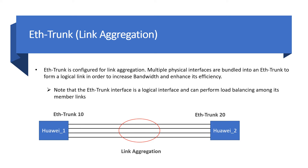In Huawei, link aggregation is called Ethernet trunk. Multiple physical interfaces are bundled into an Ethernet trunk to form a logical interface that increases bandwidth efficiency. You have to bind physical interfaces to this Ethernet trunk interface — you can bind one or multiple interfaces depending on your requirement. They can perform load balancing among these member links.